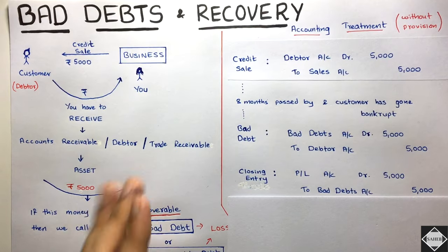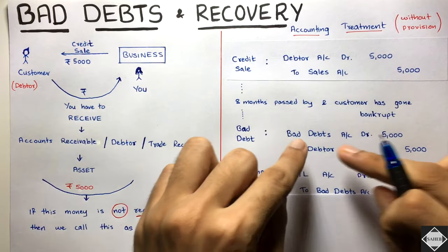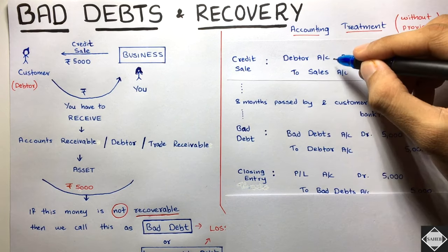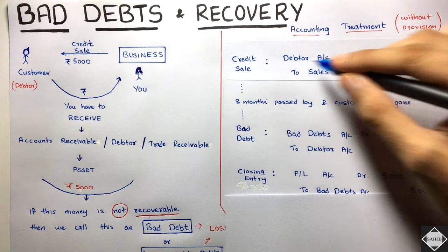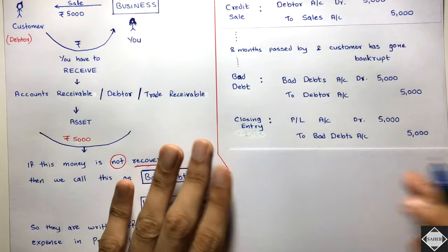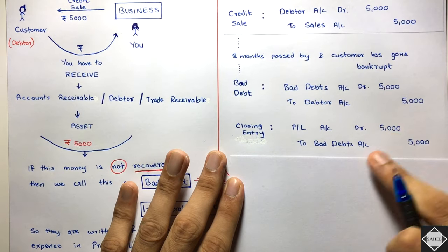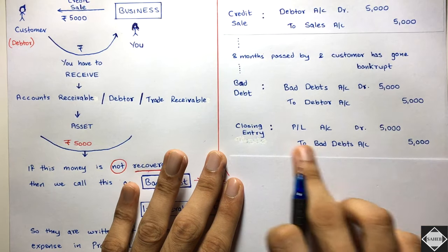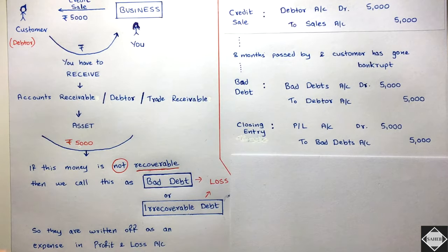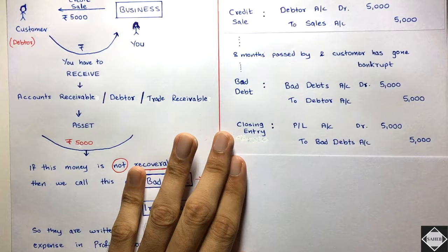So this is the full accounting treatment of bad debts: first the credit sale entry, then recording the bad debt loss — Bad Debts Account debit, Debtor/Receivables Account credit — then the closing entry: Profit and Loss Account debit, to Bad Debts Account credit. The bad debts account gets cancelled and the effect goes to the debit side of profit and loss.